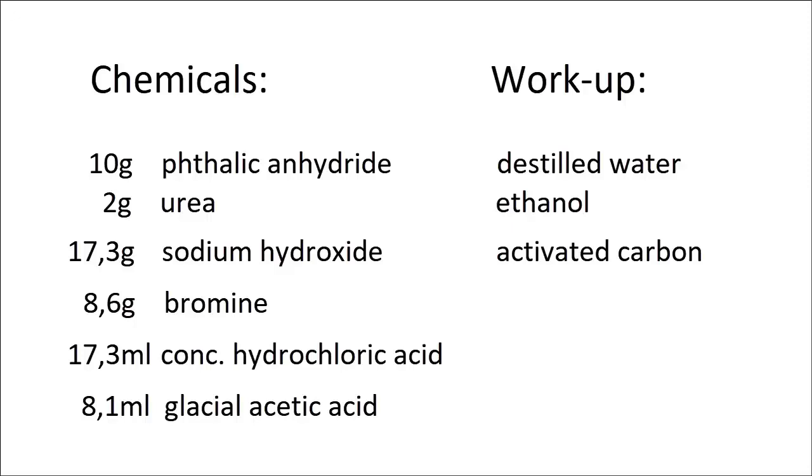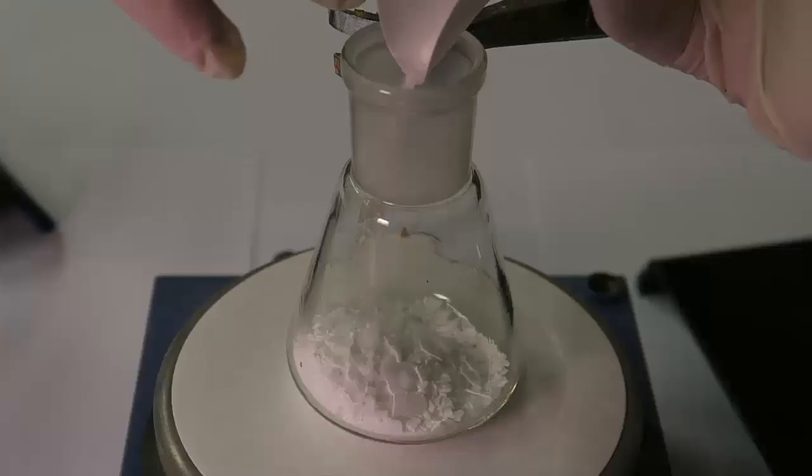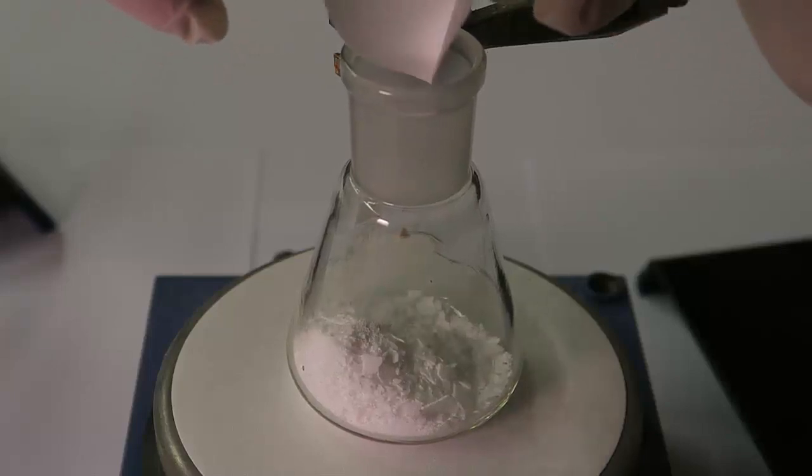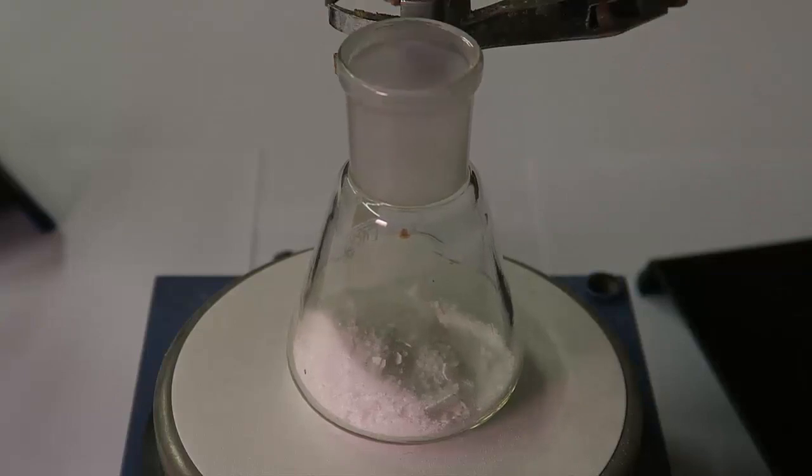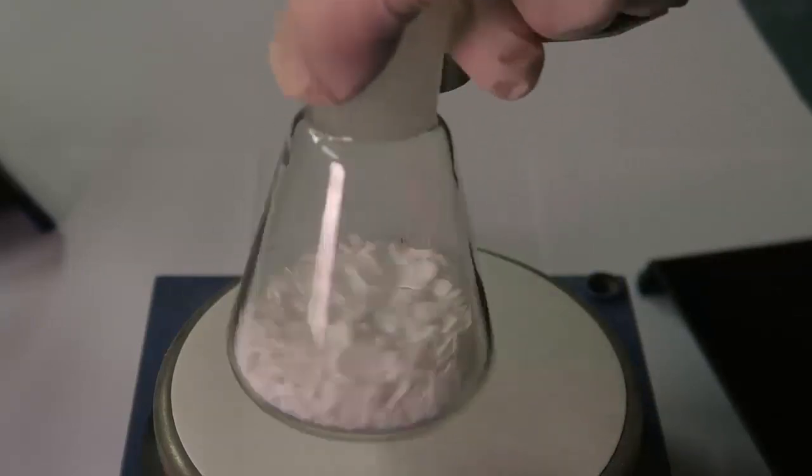Considering the workup, a bunch of ethanol, water as well as activated carbon should be available. 10 grams of phthalic anhydride are added to an Erlenmeyer flask followed by 2 grams of urea. The flask is then shaken to mix up the chemicals as much as possible.